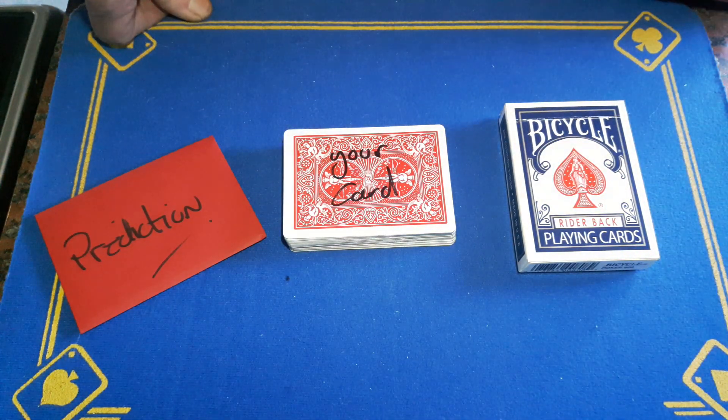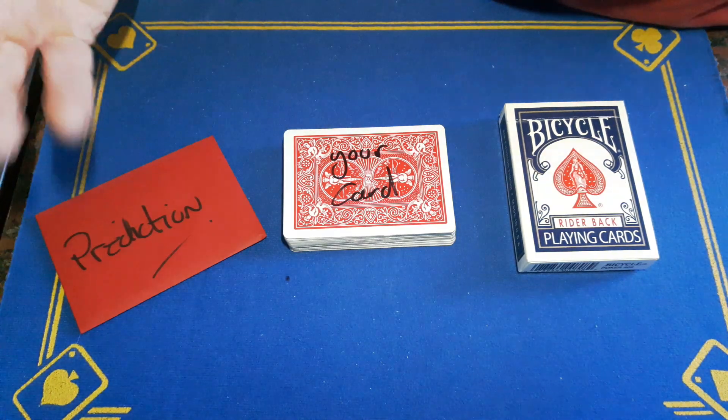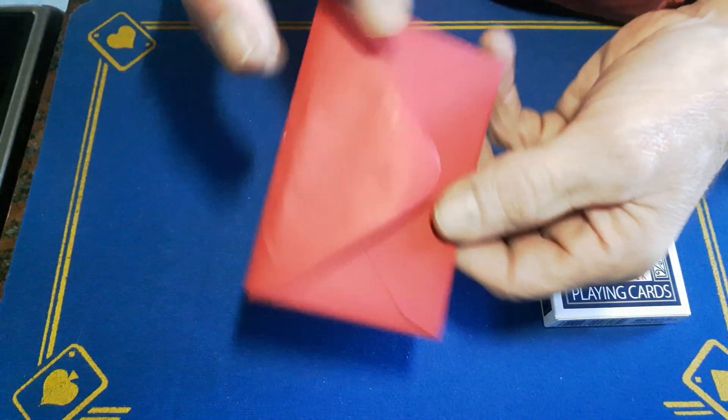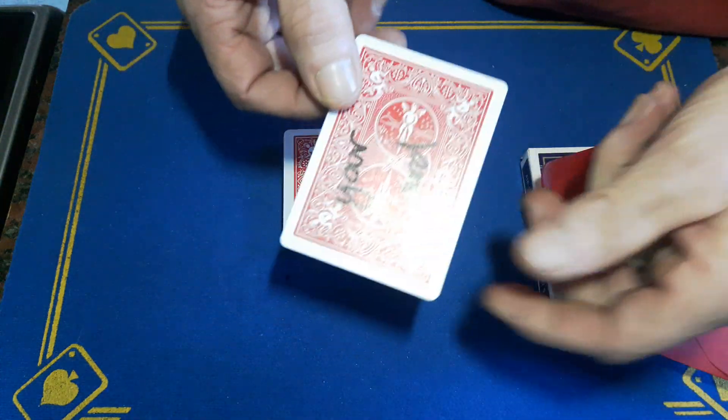Right guys, Gaffed is back with the explanation to the prediction trick you saw yesterday. It does involve a few things. You're going to have a red card in an envelope or whatever.